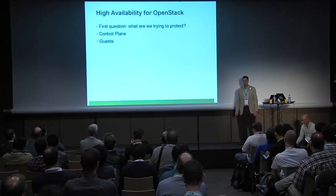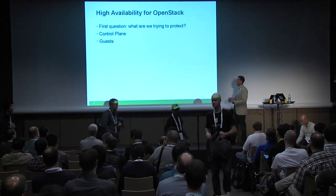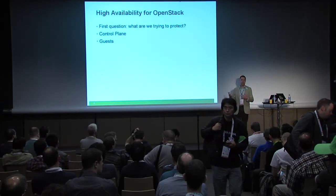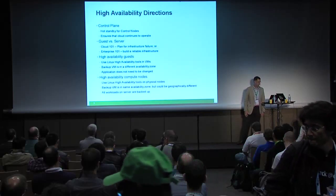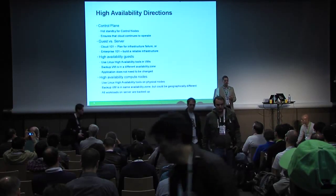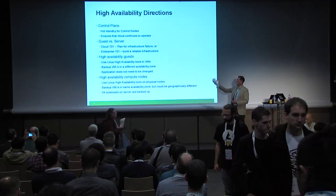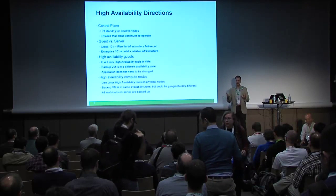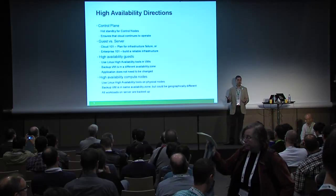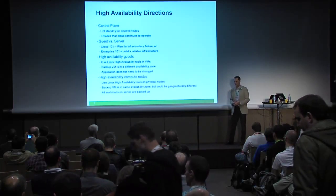What are the considerations as you start talking about making OpenStack highly available? The first question is: what am I trying to protect? The obvious choices are: am I trying to protect the control plane - the OpenStack services - or am I trying to protect the guests? Our view is that the control plane is important. You can have hot standby for the control nodes, and the key is that it ensures the cloud is always running. When you look at workloads, there's a tension with what I call 'Cloud 101' - failure is not an option, it's a feature. You just assume your cloud is going to fail and treat all your servers as cattle; you don't care if they go down.